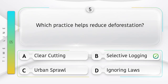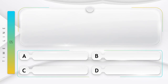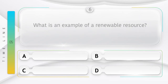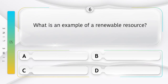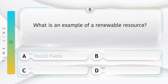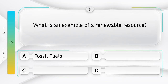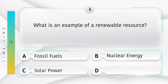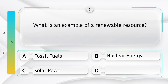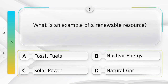What is an example of a renewable resource? Option A: fossil fuels. Option B: nuclear energy. Option C: solar power. Option D: natural gas. Answer is option C: solar power.